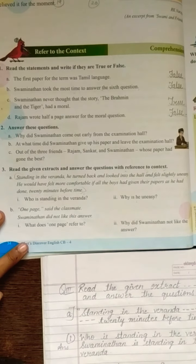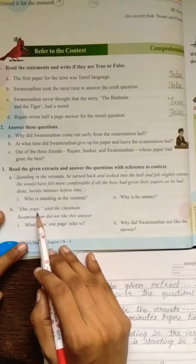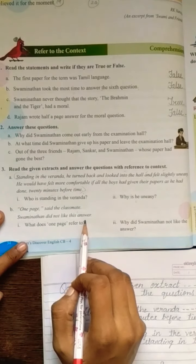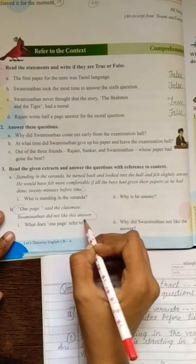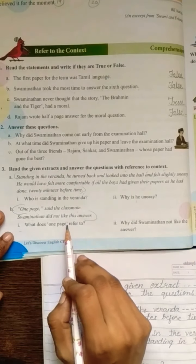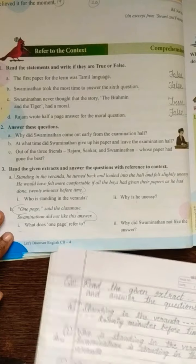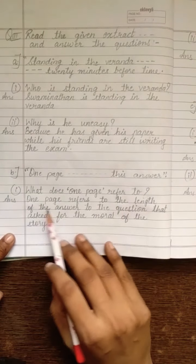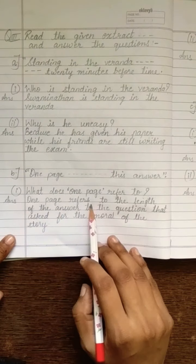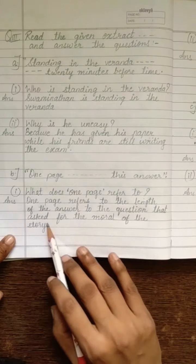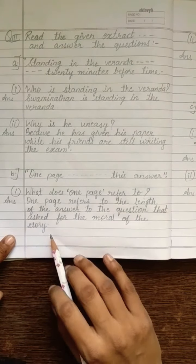now come to the extract number B. One page, said the classmate. Swaminathan did not like this answer. So, what is this? This is your context. Now, read the question number 1. What does one page refer to? Now, come to your answer.